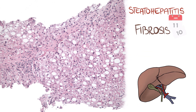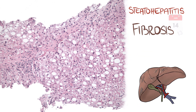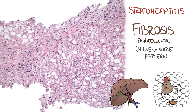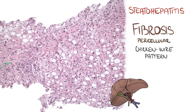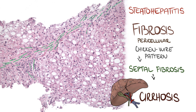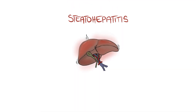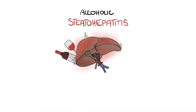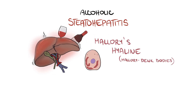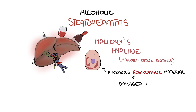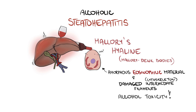In the course of time, fibrosis may develop. Such fibrosis usually starts as pericellular, forming a so-called chicken wire pattern. As time passes, it may progress into septal fibrosis, which you can see in the picture, and later into cirrhosis. In the case of alcoholic steatohepatitis, we can also find so-called Mallory's hyaline or Mallory-Denk bodies. This amorphous eosinophilic material in the cytoplasm of hepatocytes is in fact a clump of damaged intermediate filaments, as a consequence of alcohol toxicity to the cytoskeleton of hepatocytes.